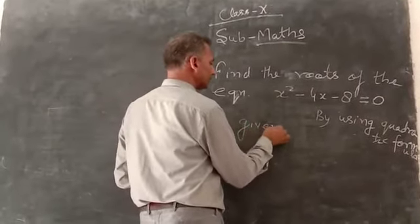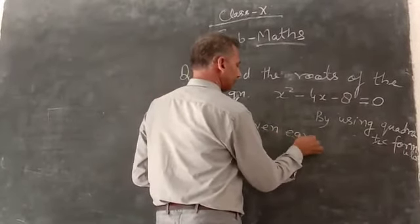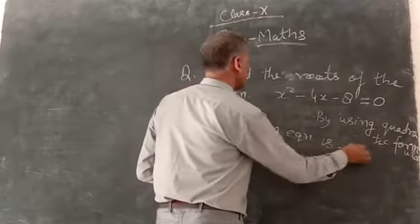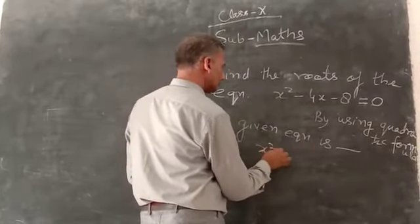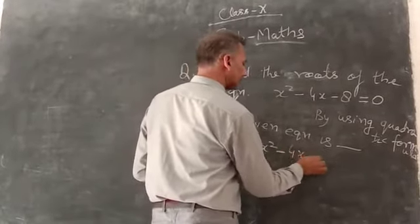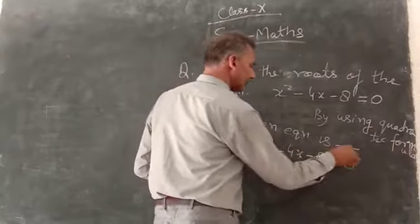Given equation is x² - 4x - 8 = 0. It is the given equation.